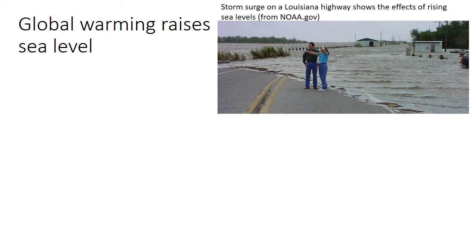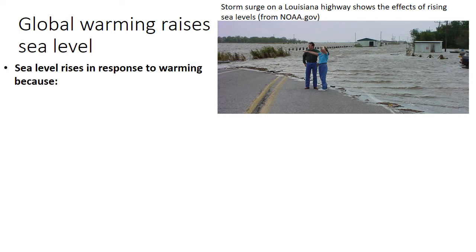Now let's talk about some of the changes we're expecting to see as climate changes on land. One of these changes involves the ocean and will mainly affect coastal regions — specifically the effects of global warming on sea level. As sea level rises, we can expect more flooding of coastal areas and increased storm surge during storms. When we think about sea level rise as a result of warming, there are really two different reasons why we expect sea levels to increase.